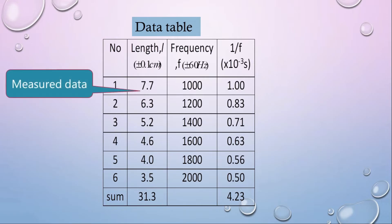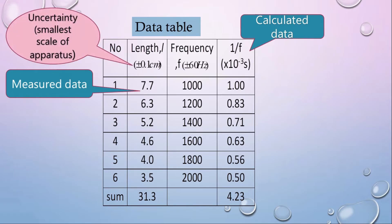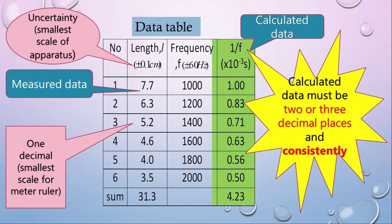The data table consists of two columns: measured data and calculated data. For the measured data, they have uncertainty, which is the smallest scale of the apparatus. For this example, the length is measured using a meter ruler. So the uncertainty is 0.1 cm, taken from the smallest scale of the meter ruler. For the calculated data, values must be to two or three decimal places and consistently formatted.